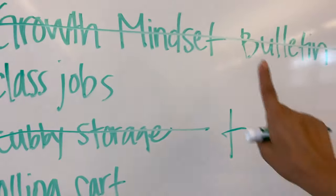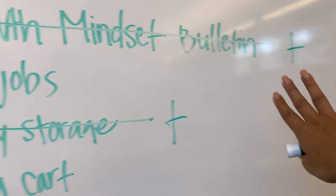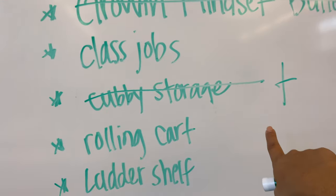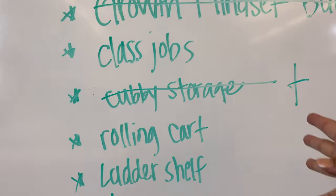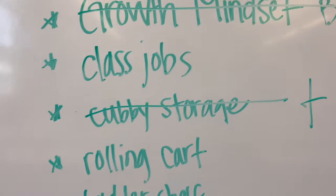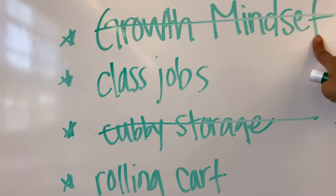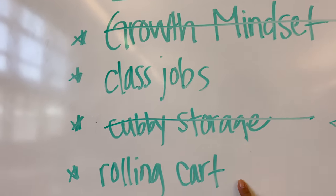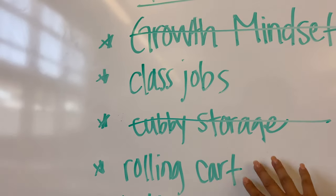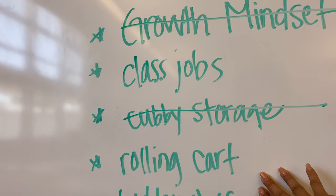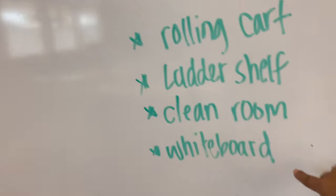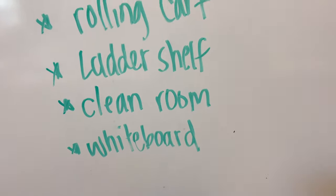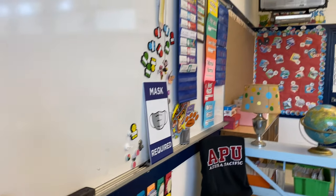I'm going to do something else — let me check my to-do list because I'm a little scatterbrained right now. It's looking like the cubby is going to be done tomorrow — that's why I put a T there. I'm glad I opened up the box so I can see what tools I need. Tomorrow I'll also take a look at the rolling cart and open that up to check if I need tools. Then the ladder shelf, organize the room, and the whiteboard. It's looking like a short to-do list for today.